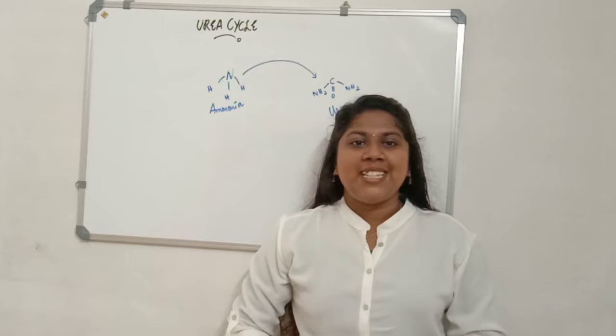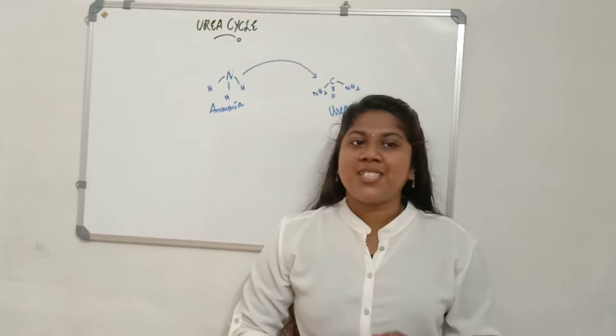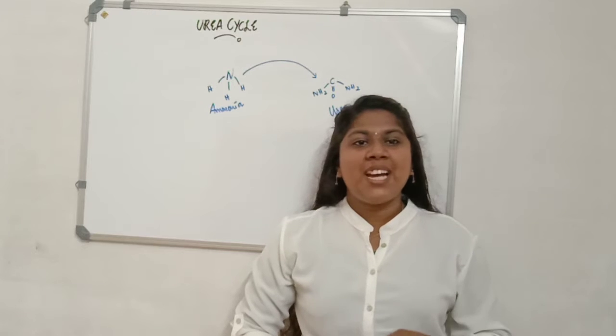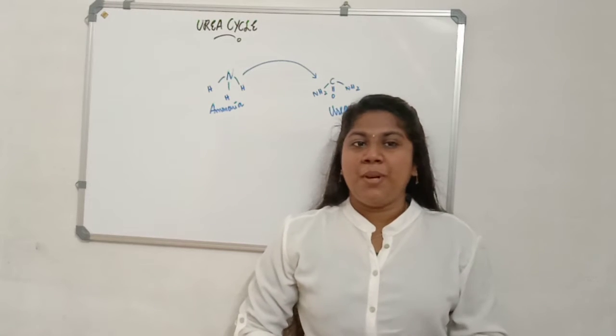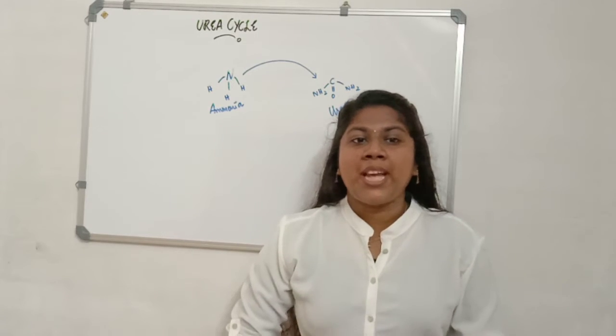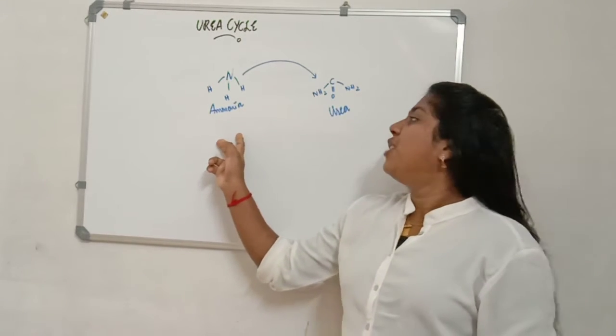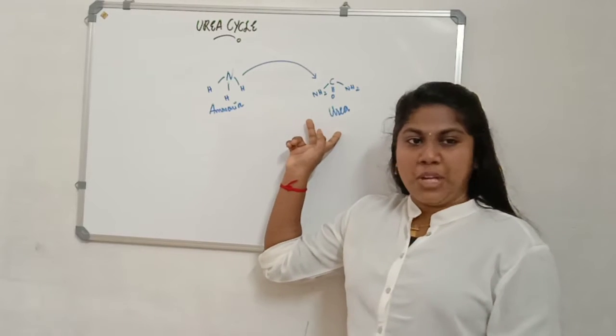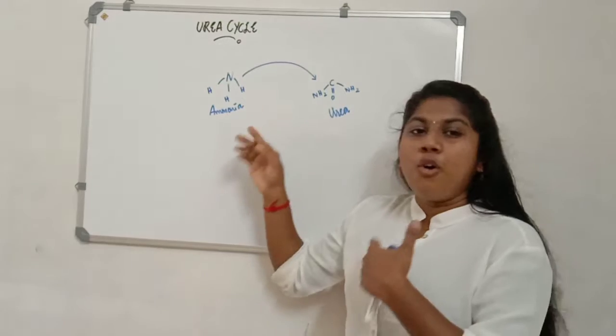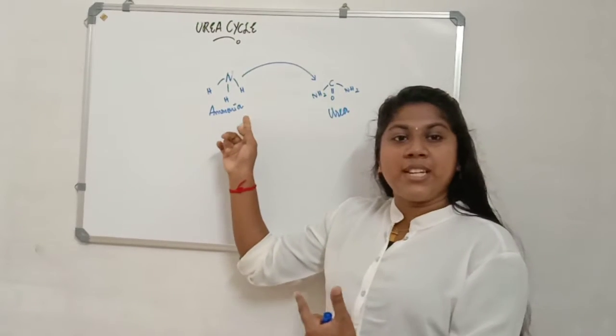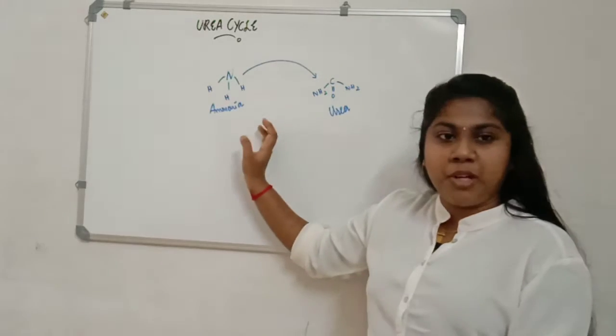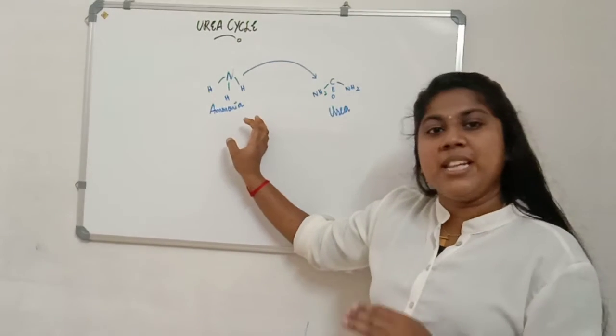We know that the excretory nitrogenous compound is in the form of ammonia, but this ammonia is highly toxic to human body. So our body itself found a mechanism to convert this nitrogenous ammonia to less toxic urea. How is this ammonia converted to urea or how is ammonia produced in our human body? Let's look first at the formation or production of ammonia in the human body.